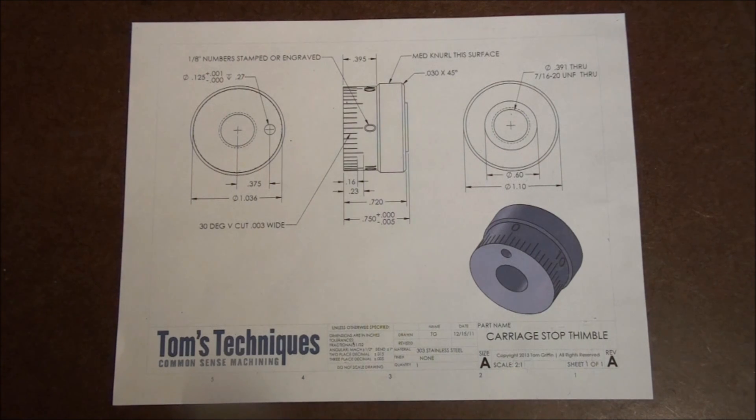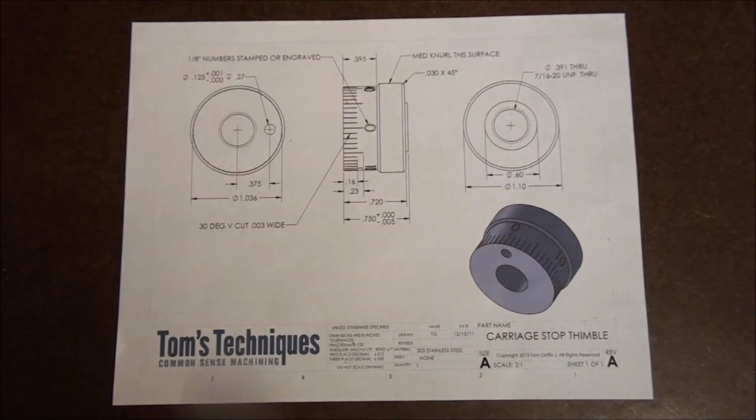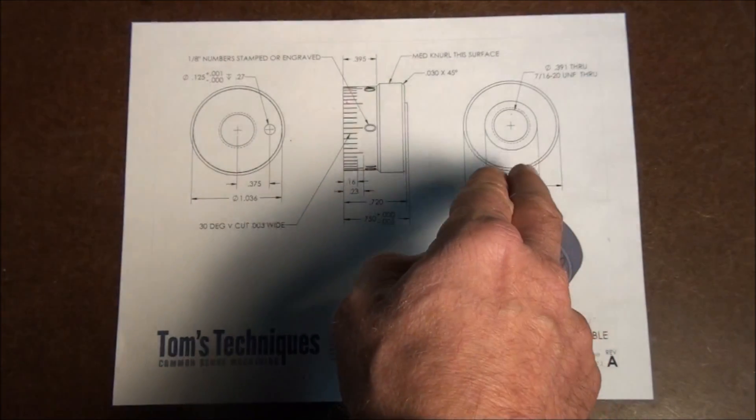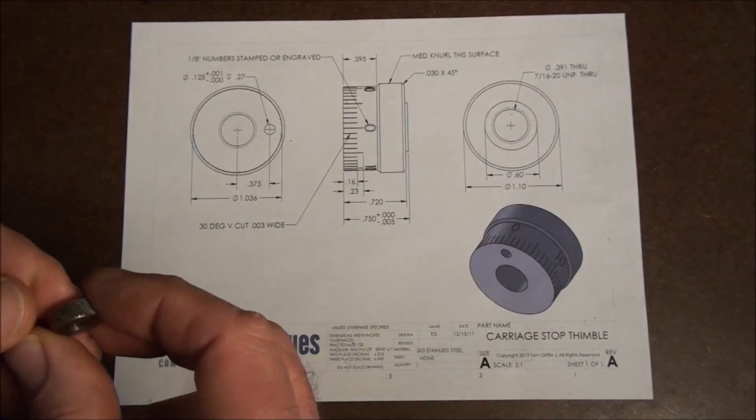Another thing we have to look at is the diameter for this knurl. It has a medium knurl called out on it. Whenever I knurl a part, I always double check the diameter and make sure that the diameter suits the knurl I'm going to use.